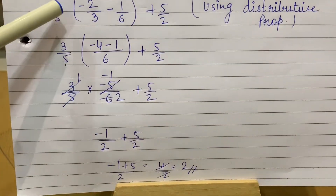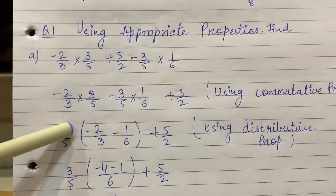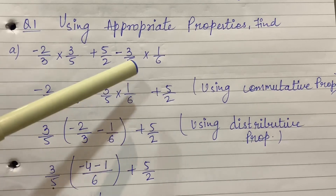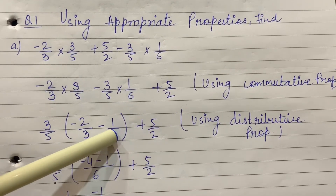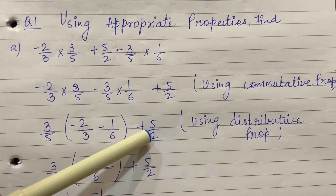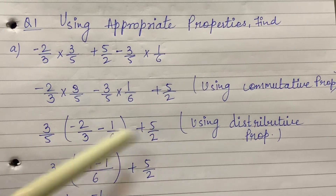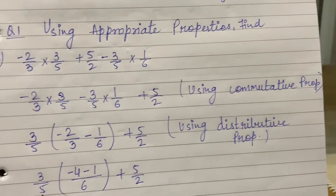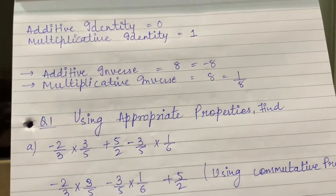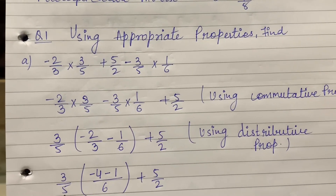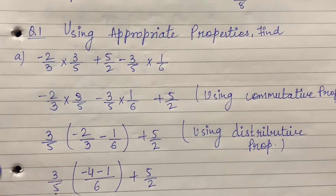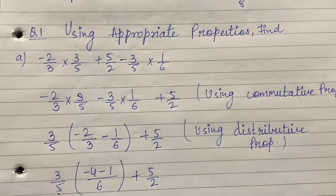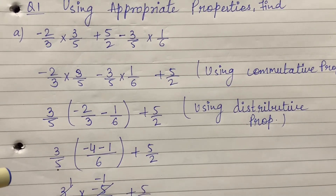Now, in this we take minus 3 upon 5 as common. So minus 2 upon 3 will go inside the bracket, and the minus sign remains as it is, and 1 upon 6 goes inside the bracket. Then plus 5 upon 2 remains as it is. Now, the property of taking out a common factor is called distributive property.